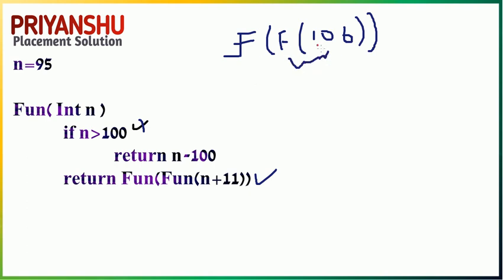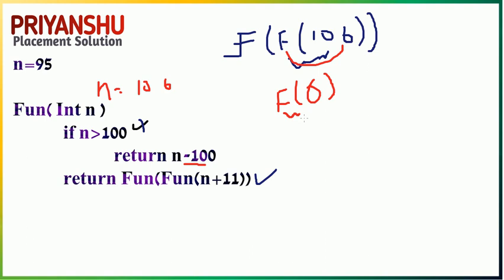Now the value of n is 106. Since 106 is greater than 100, it returns n minus 10, which is 6. So this inner function returns 6. Then the outer function is called again with f(f(n+11)), meaning f(17). The condition 17 > 100 is also false, so again this block is executed, and the function keeps being called recursively.